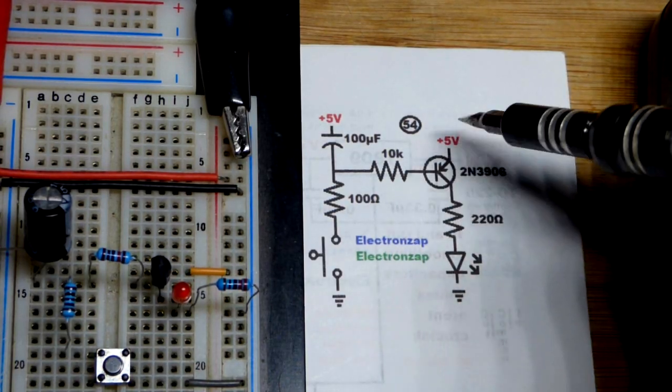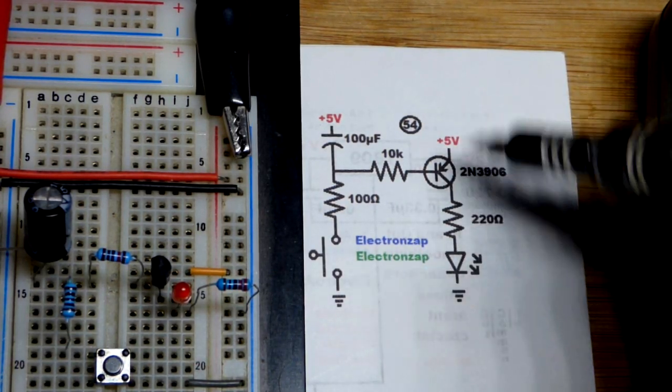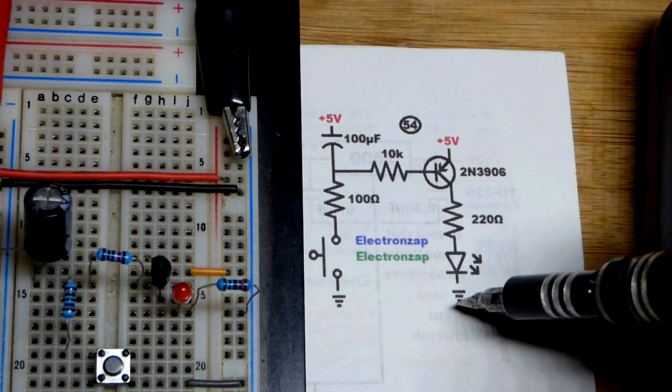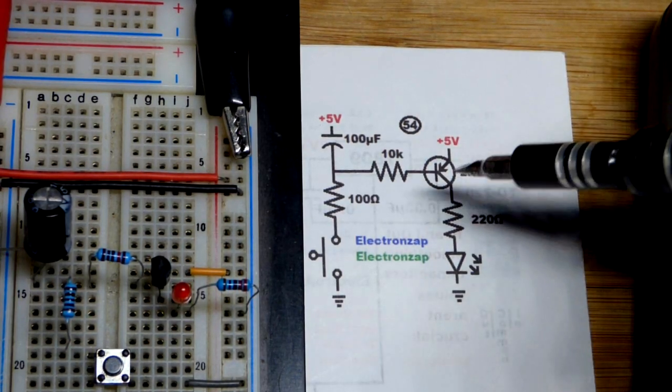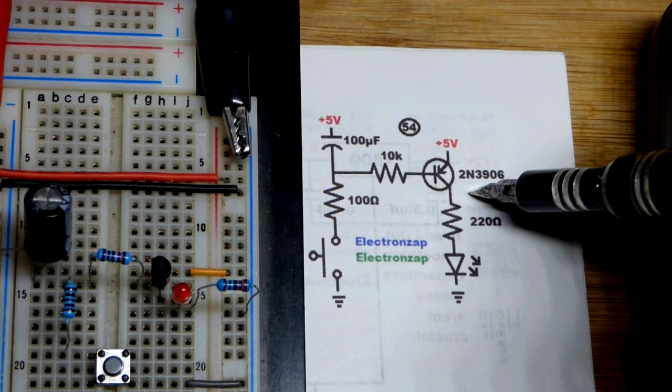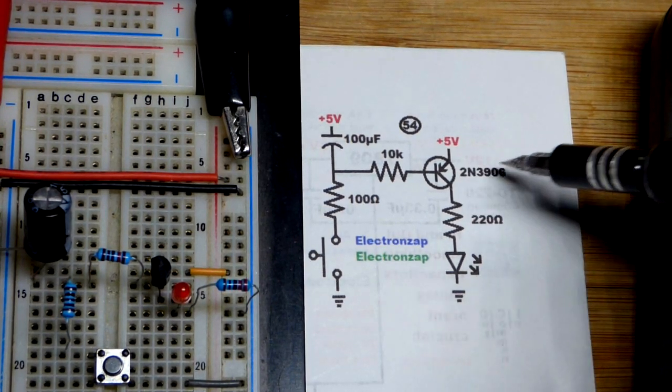When you got higher currents, it doesn't seem to allow as many times amount of current to flow through, but still a high amount. Be aware of that. And each transistor has different gain range. You got to check the data sheet for specifics.